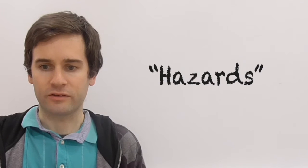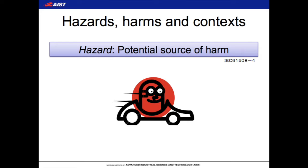First I'm going to talk about hazards. A hazard is a potential source of harm in the system. For example, if you have a moving car it includes a hazard of high speed motion. Hazards are always ever present in the system — they are often inherent to the system's function. If you look at a car, it has to move in order to be useful, which means the motion hazard is always going to be present. We can't get rid of it.